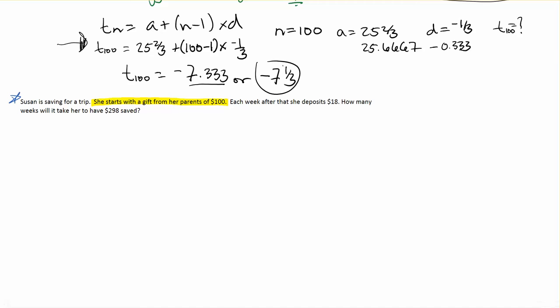So what does that mean? She starts with a gift of $100. That means her first amount that she has is $100, so A is equal to 100.